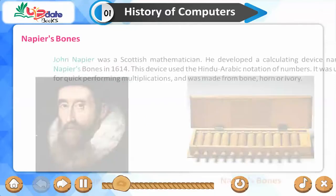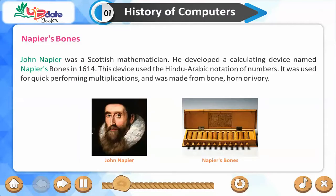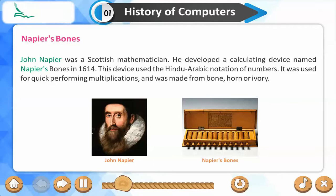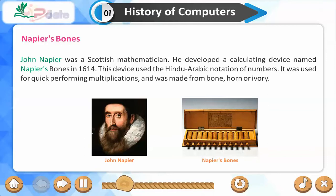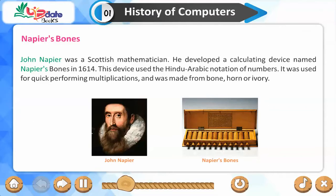Napier's Bones. John Napier was a Scottish mathematician who developed a calculating device named Napier's Bones in 1614. This device used the Hindu-Arabic notation of numbers. It was used for quick-performing multiplications and was made from bone, horn, or ivory.